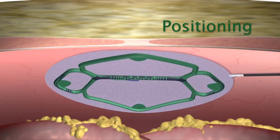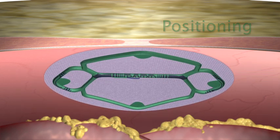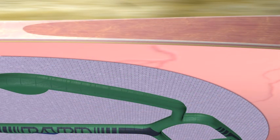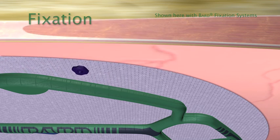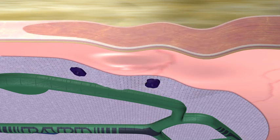The ECHO-PS Positioning System keeps the mesh open and up against the abdominal wall, allowing for complete visibility during initial fixation with a device such as the BARD SorbaFix absorbable fixation system.